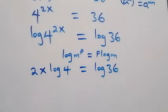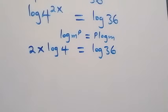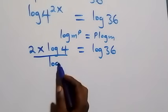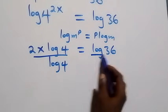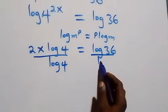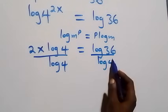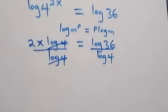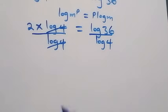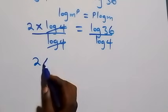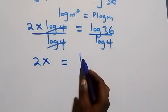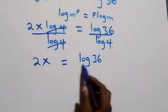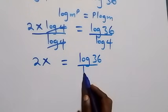From here we divide both sides by log 4. Dividing this side by log 4 and also this side by log 4, the log 4 terms cancel each other, and we are left with 2x equals log 36 over log 4.